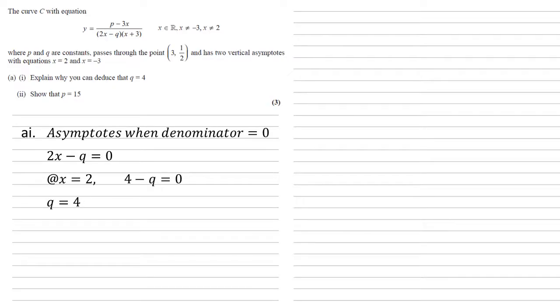For part 2, we need to show that p is equal to 15. Well, we know that the curve passes through the point (3, 1/2) and we've worked out that q equals 4. So substituting all those in,